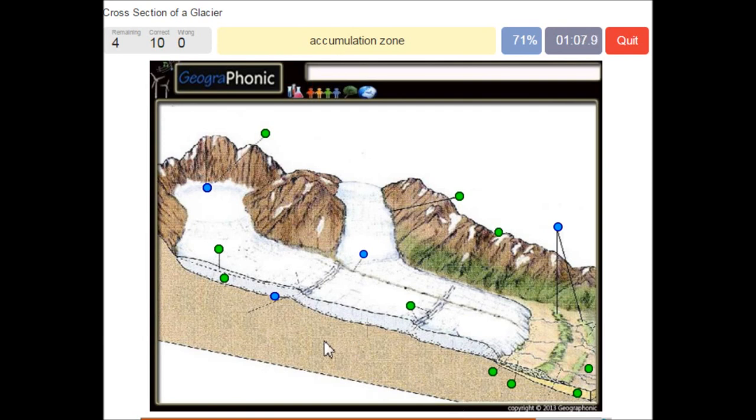Accumulation zone is this area. Sorry, that's wrong. The terminal moraine is what we see here. This is also a terminal moraine.